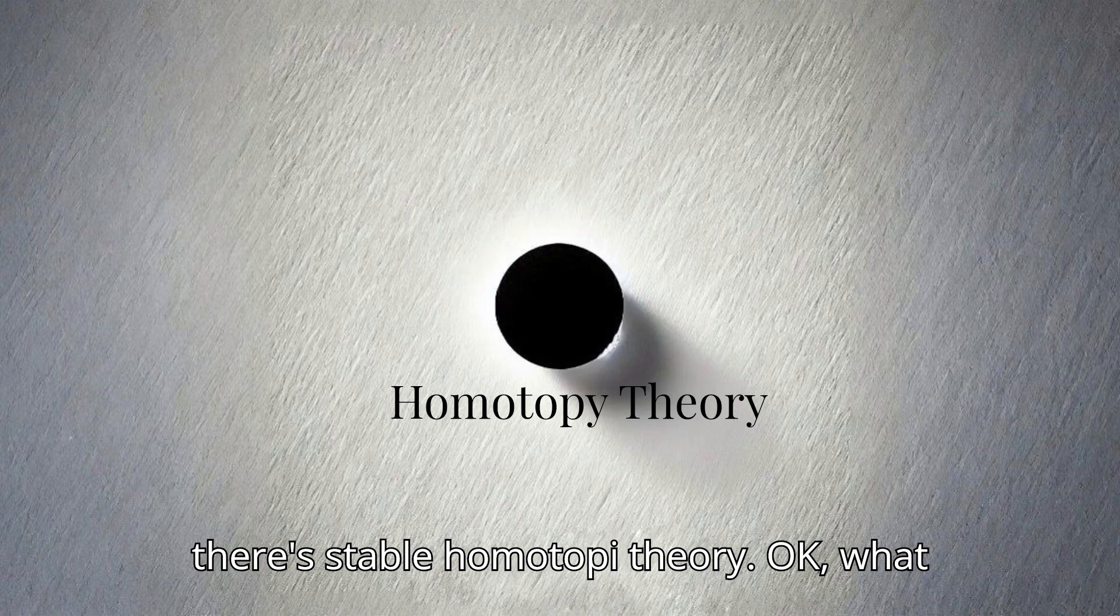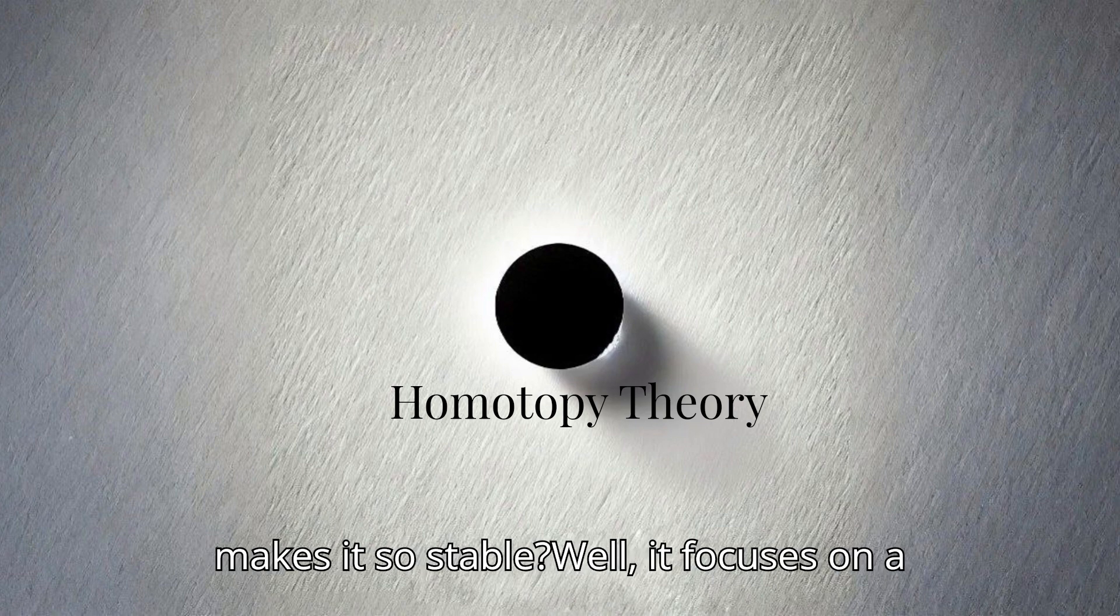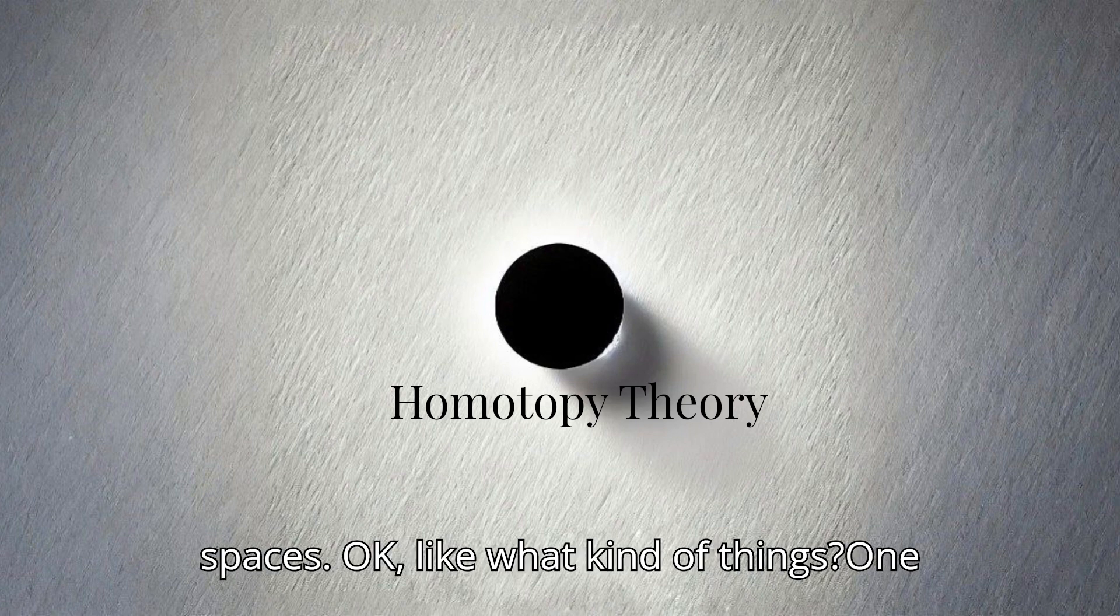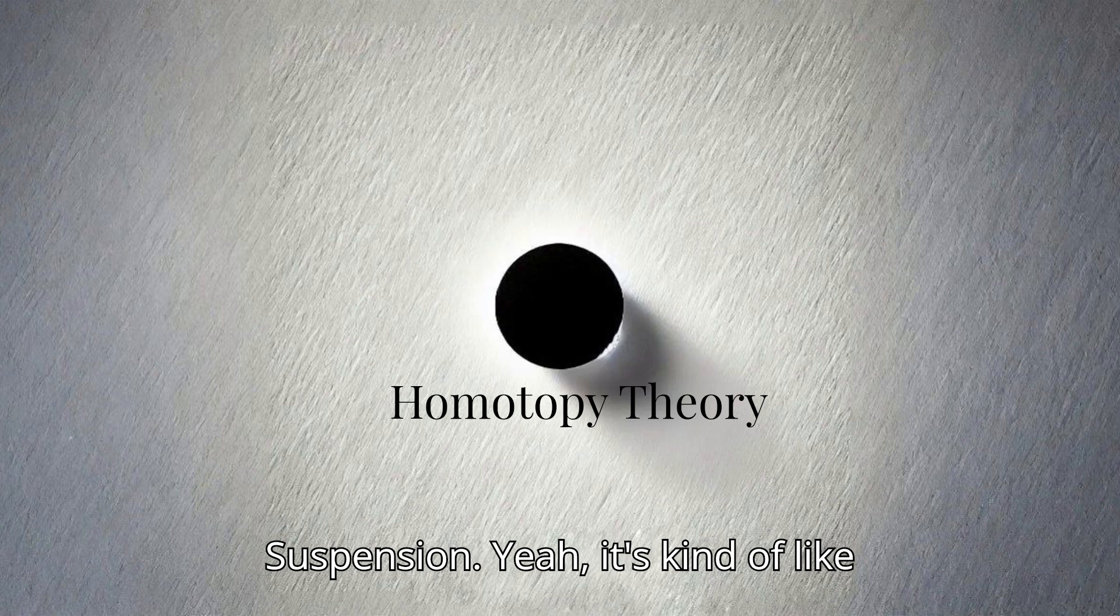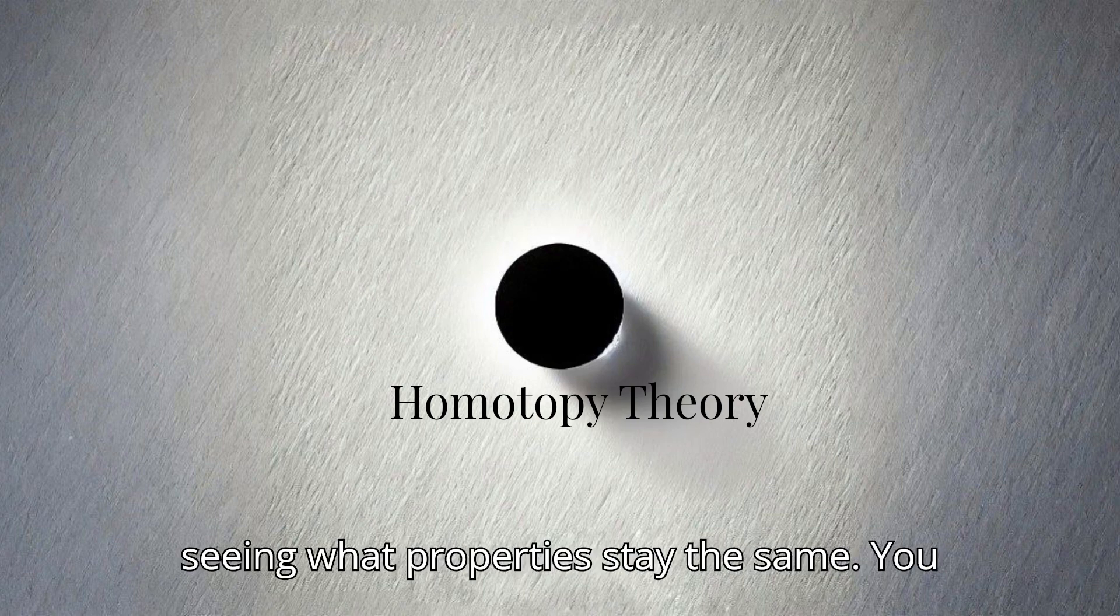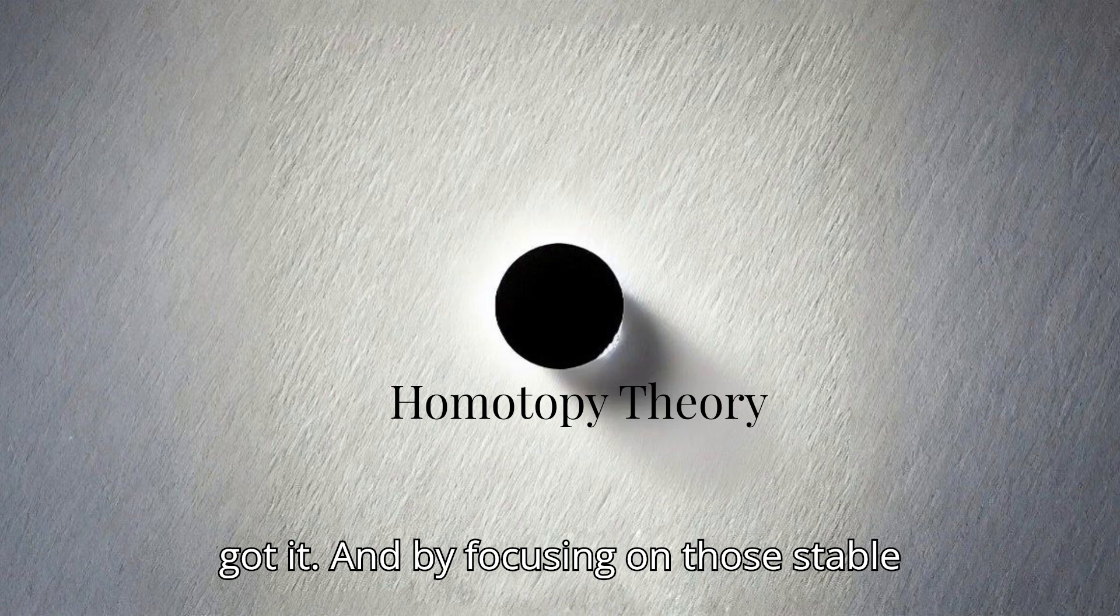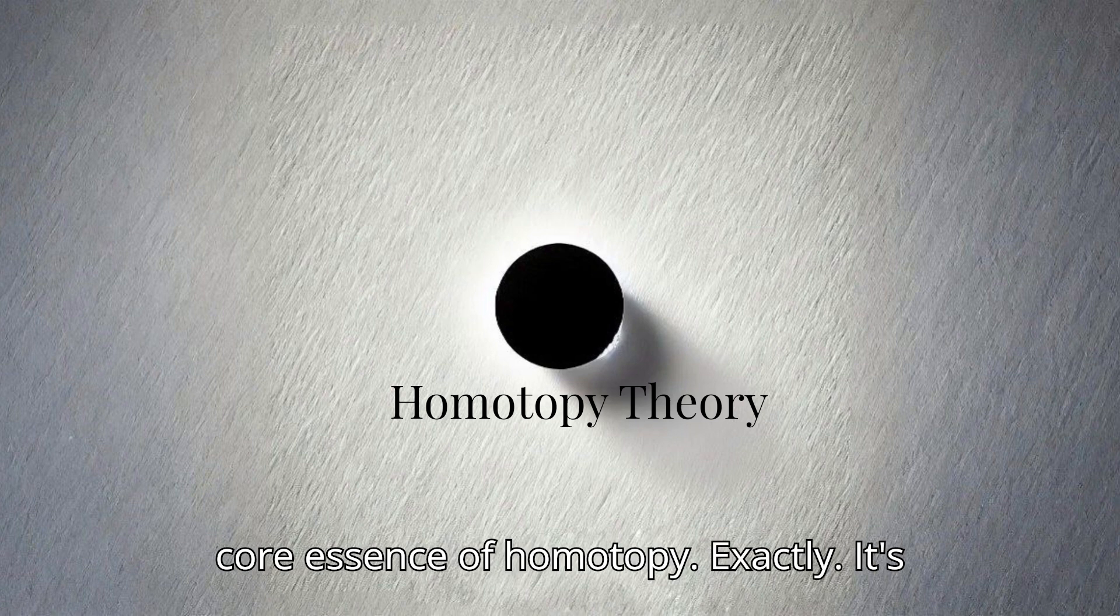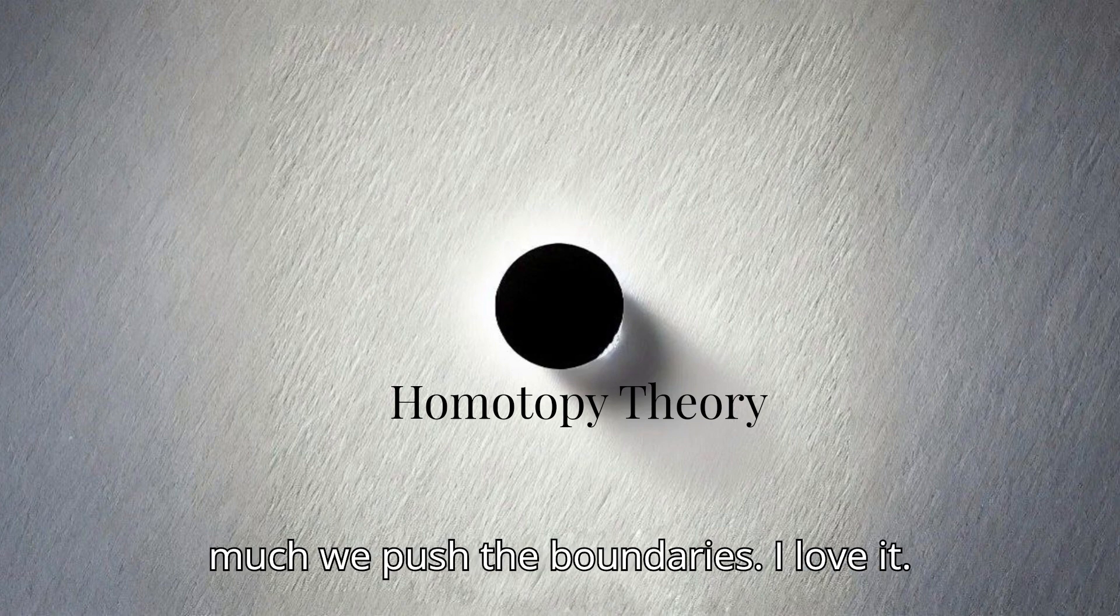Right. And then there's stable homotopy theory. Okay, what makes it so stable? Well, it focuses on a special kind of homotopy equivalence, one that doesn't change, that stays stable, even when we do certain things to the spaces. Okay, like what kind of things? One example is something called suspension. Suspension. Yeah, it's kind of like adding another dimension to a shape. So we're stretching a shape into higher dimensions. Exactly. And then we're seeing what properties stay the same. You got it. And by focusing on those stable properties, mathematicians can uncover these really deep patterns, these relationships that might not be obvious otherwise. So it's like we're finding the core essence of homotopy. Exactly. It's the stuff that holds true no matter how much we push the boundaries.